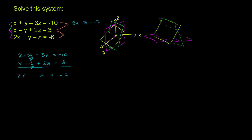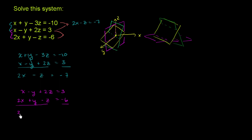Now let's use the second and third equations. We can reuse the second equation since we're now adding the new constraint from the third equation. We have x - y + 2z = 3 and 2x + y - z = -6. Adding these to eliminate y: x + 2x is 3x, the y terms cancel, and 2z - z gives z. That equals 3 + (-6) = -3. So we get 3x + z = -3. Now we have a system of two equations with two unknowns.